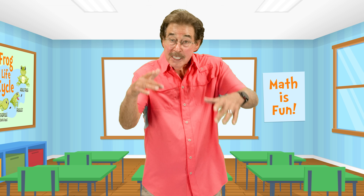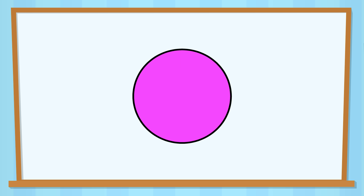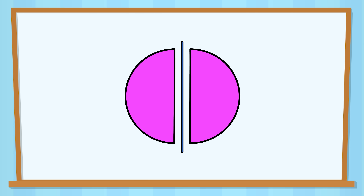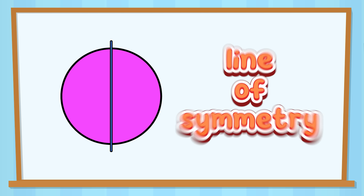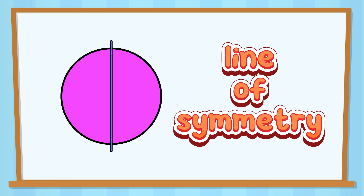Symmetry! Symmetry is when an object looks the same on both sides. The line down the middle is a symmetry line. Each side matches perfectly — each side of the line of symmetry.